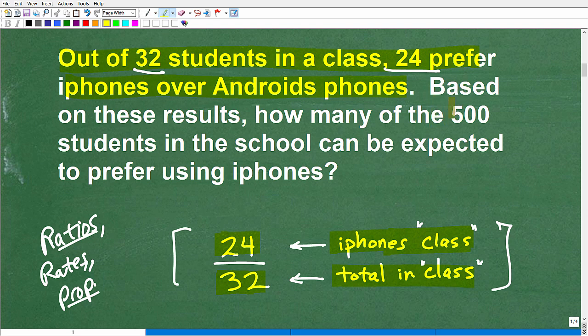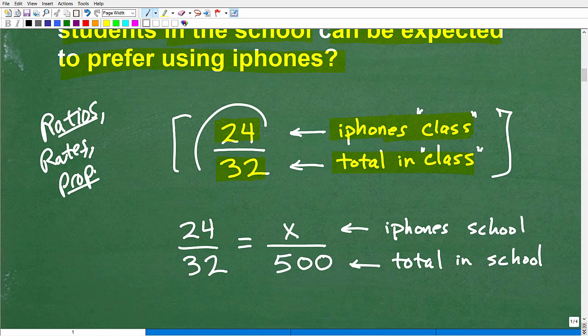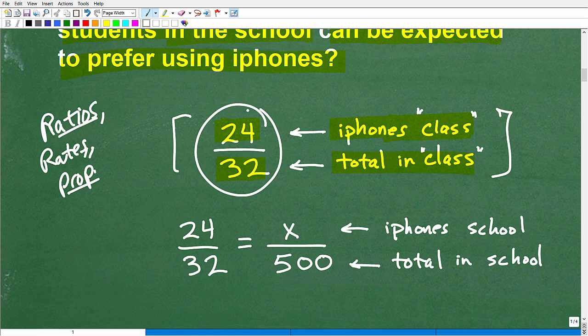So, now we want to move on or read the rest of the problem. So, based on these results, how many of the 500 students in a school? So, now we're out of the class, and we're talking about the school now. So we have a school that's 500 students large. So, how many of the 500 students in the school can be expected to prefer using the iPhone? So, this right here is a ratio. Now, this ratio gives us a percentage of how many people like iPhones in the class out of the total class. Well, this same sort of ratio, this same sort of percentage will be the same at the school level. But we need to take this ratio and set up a proportion. So, that's what we're going to have to do, and that's kind of the math topic here. So, a proportion is two equal fractions or two equal rates or ratios. So, we have a ratio here. I want to set it equal to another ratio.